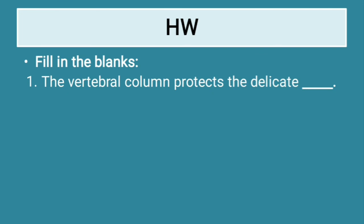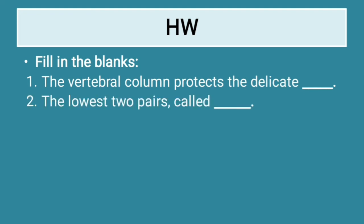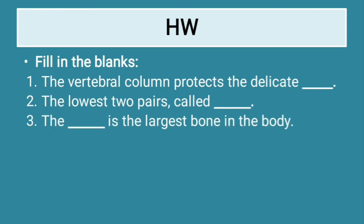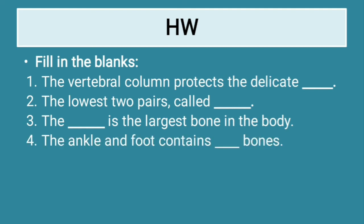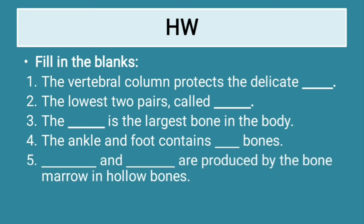That was all for today's content. Now let us look at some homework — fill in the blanks. First: the vertebral column protects the delicate blank. Second: the lowest two pairs of the rib cage are called blank. Third: the blank is the largest bone in the body. Fourth: the ankle and the foot contain blank bones. Fifth: blank and blank are produced by the bone marrow in the hollow bones. These are easy because we have already discussed these points.